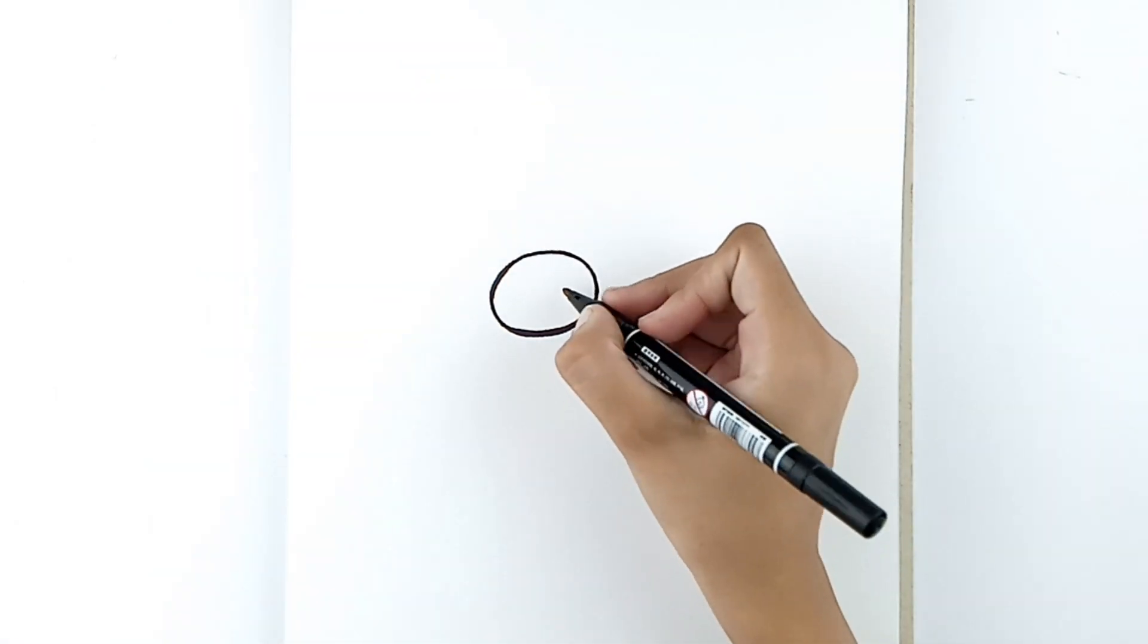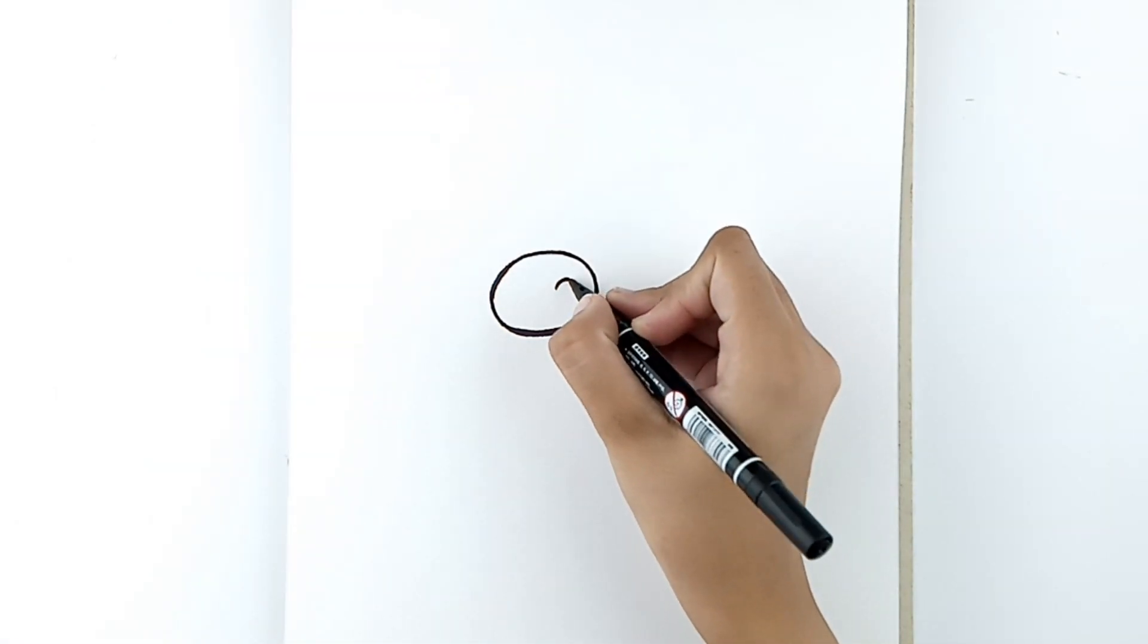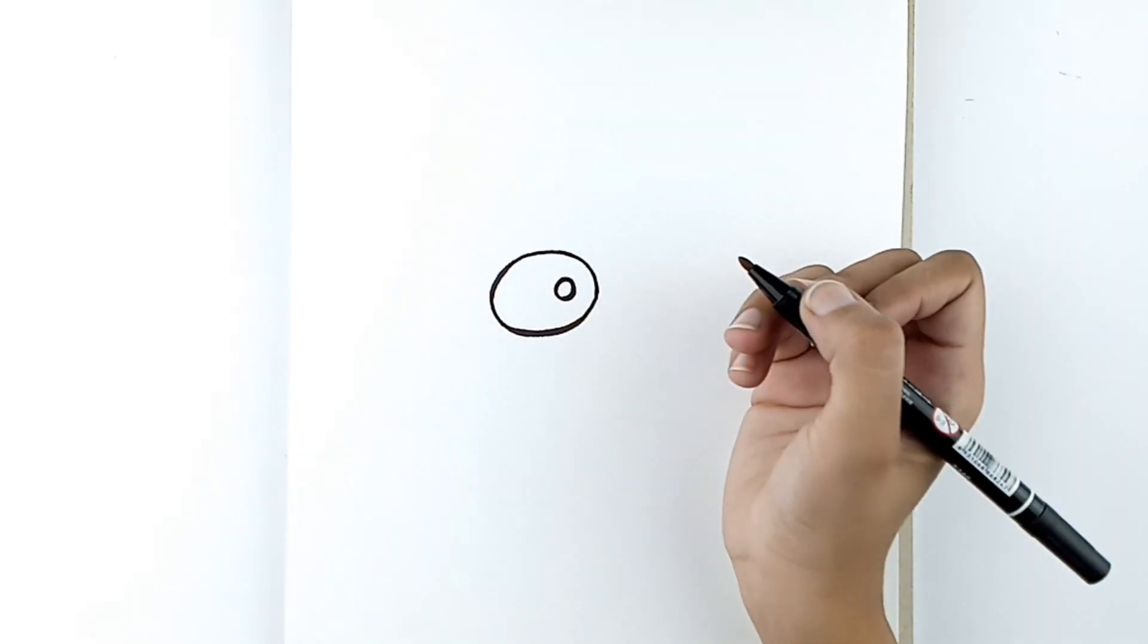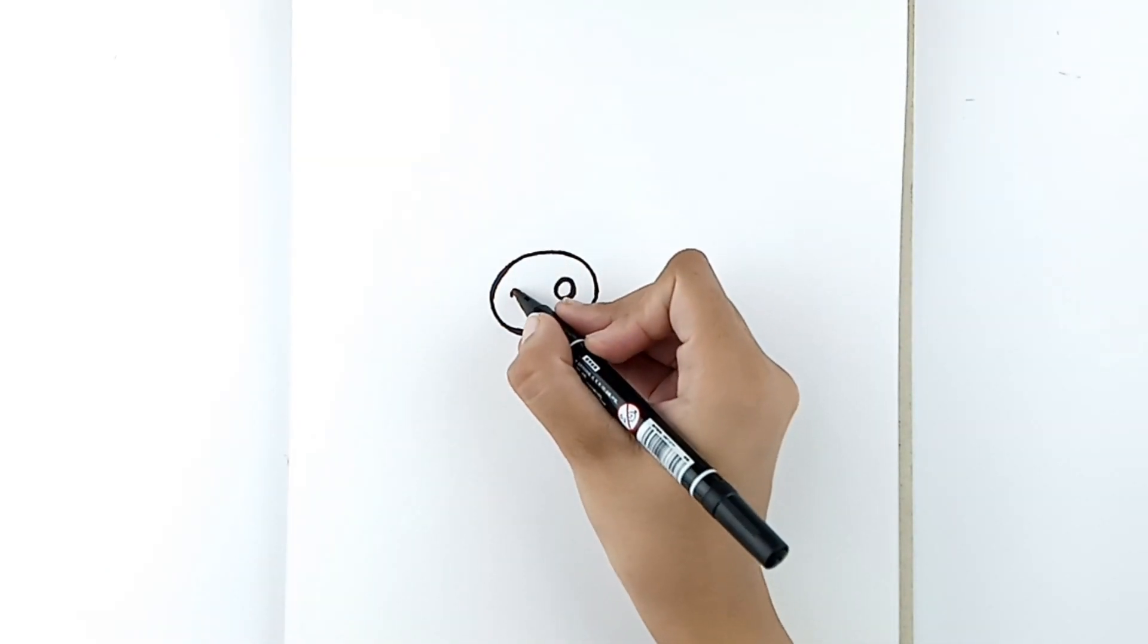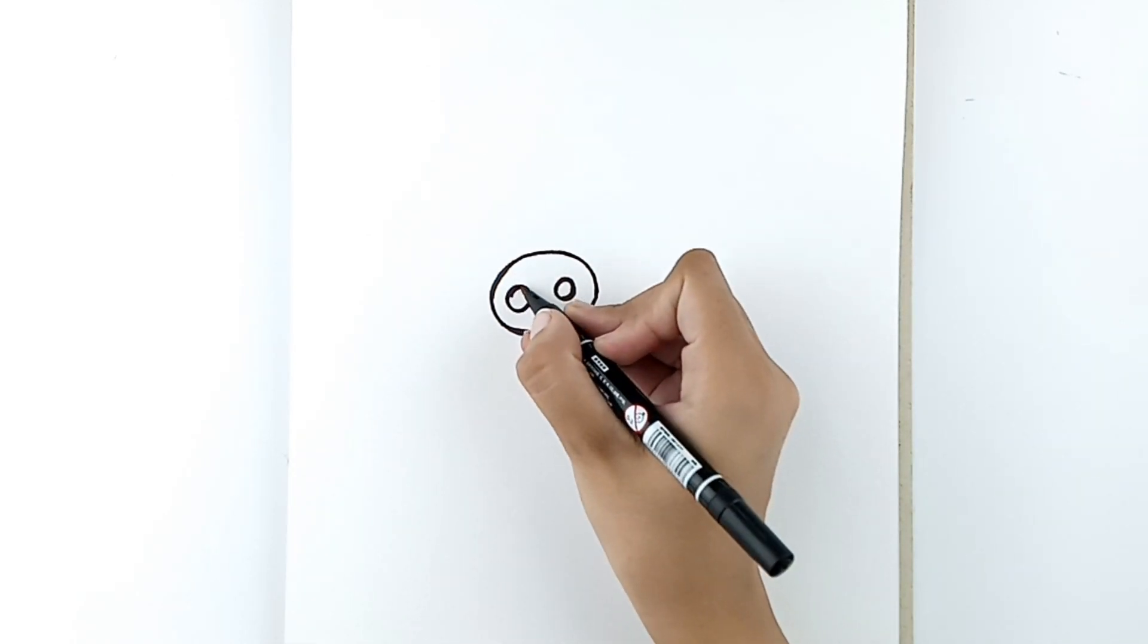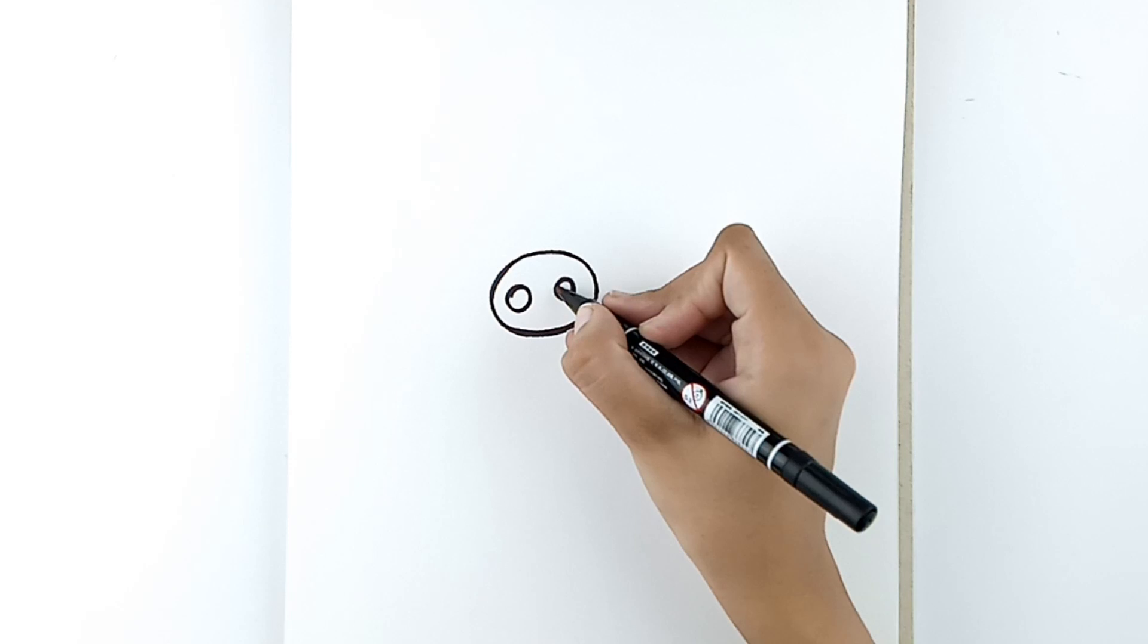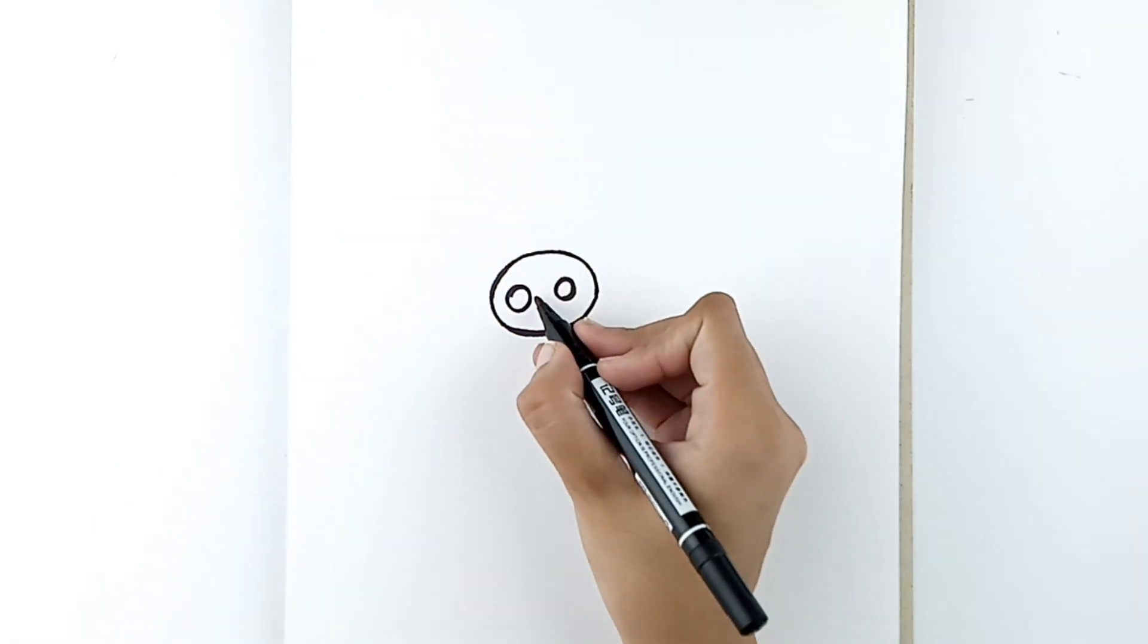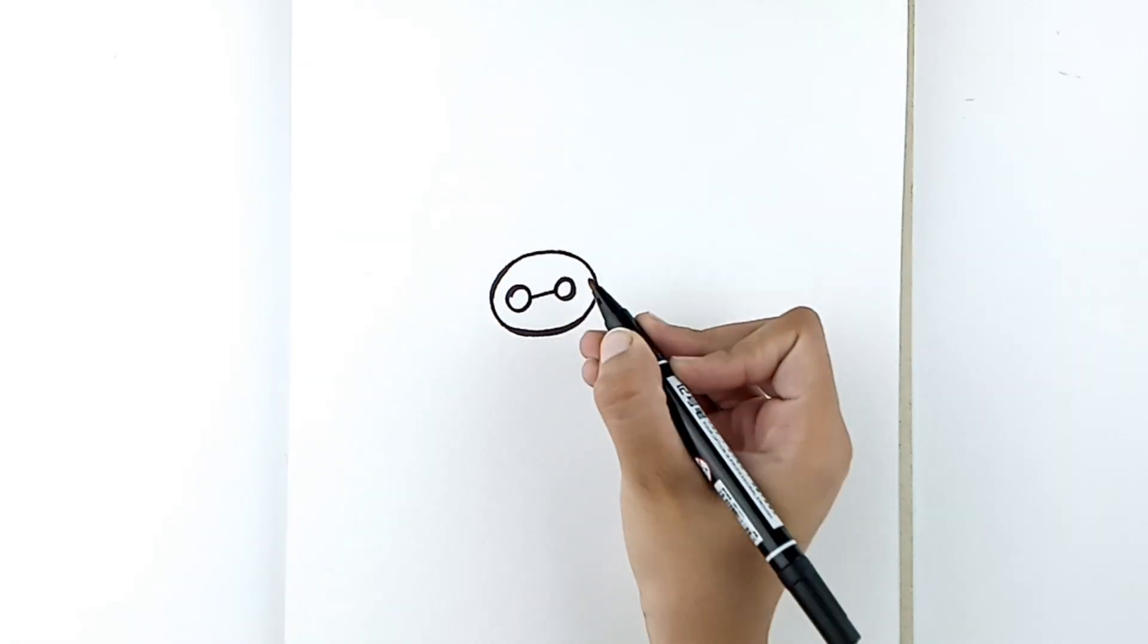Next, we will be adding the eyes. Draw two smaller circles inside the big circle. Just like that. Now, connect them with a line in between.